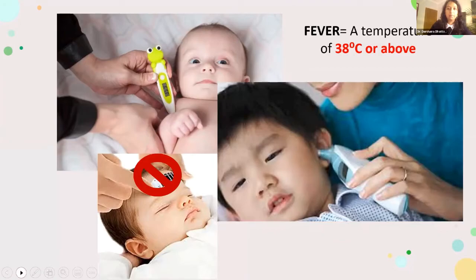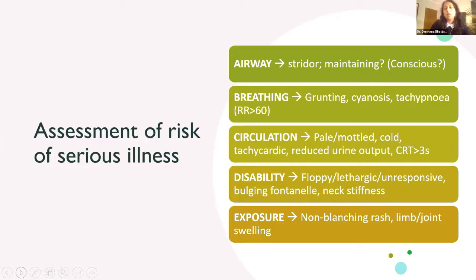I want to go through the ABCD way of assessing a child for risk of serious illness — this is my go-to structure because you rarely miss anything important. A is for airway: assess the patency of the child's airway, listen for stridor indicating partial upper airway obstruction, and assess whether they're maintaining their own airway. If a child is unconscious, their airway is by definition at risk.